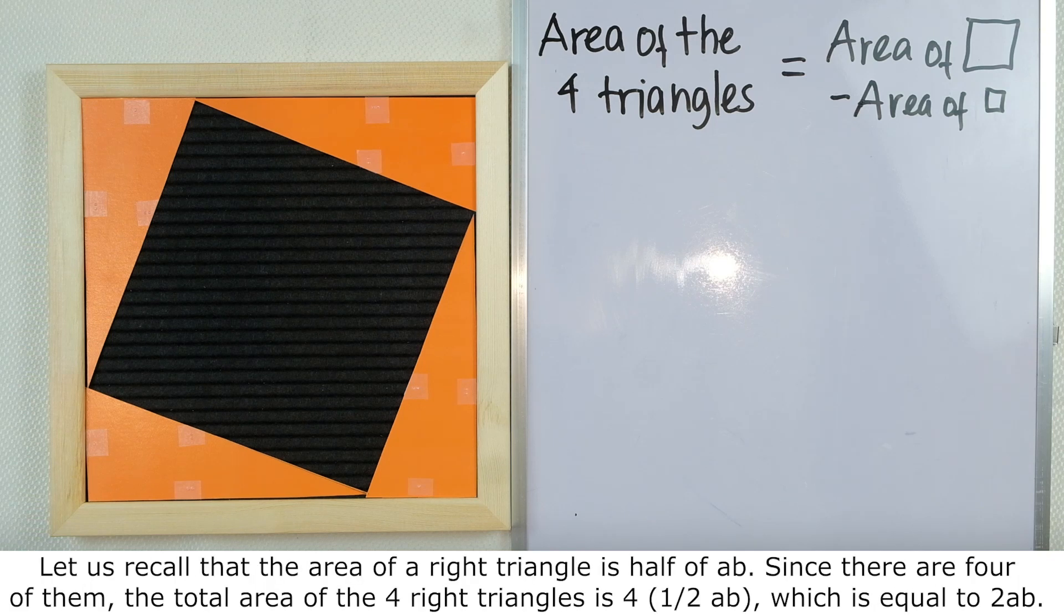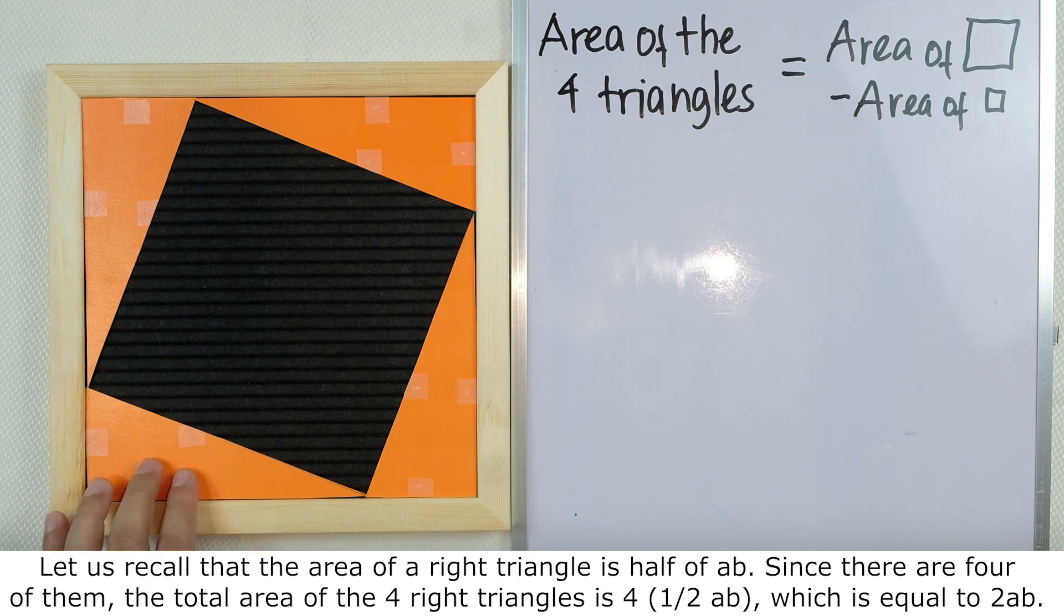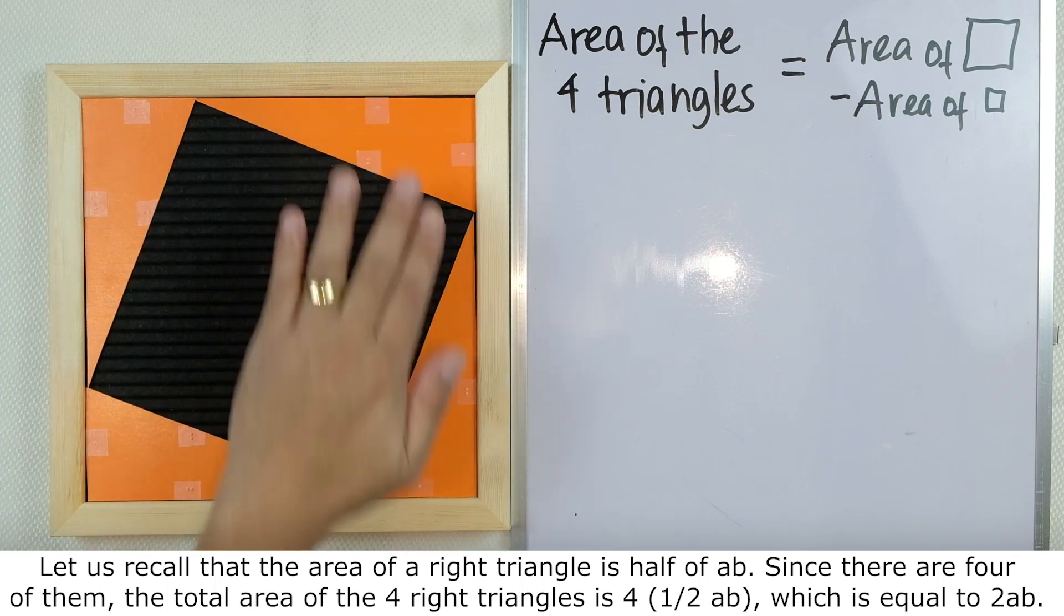Let us recall that the area of a right triangle is half of a times b. Since there are four of them,